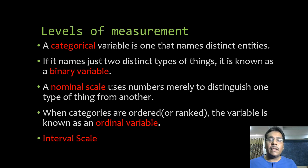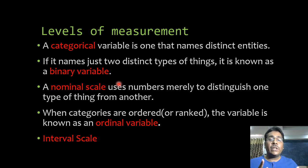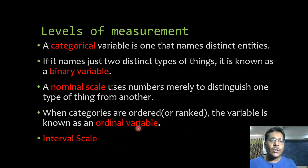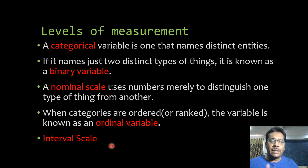We must also be clear about the kind of measurement we are doing. A categorical variable names distinct entities; if there are only two categories it is a binary variable. Numbers that only distinguish one entity from another represent a nominal scale. Rankings represent an ordinal scale. Continuous numbers where the distance between values is equal represent an interval scale. If there is a true zero, we are talking about a ratio scale.